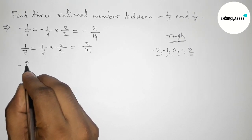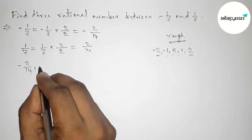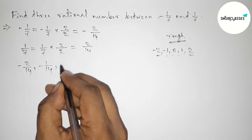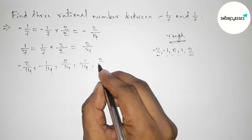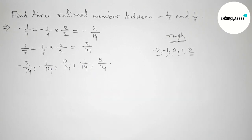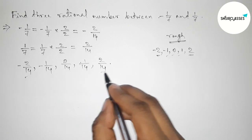So now first write down here all the rational numbers. So -2/14, then -1/14, then 0/14, then 1/14, then 2/14. So here between this and this we can get here 3 rational numbers.